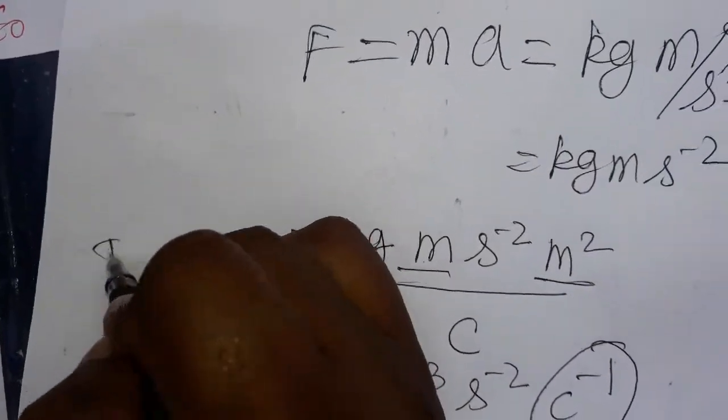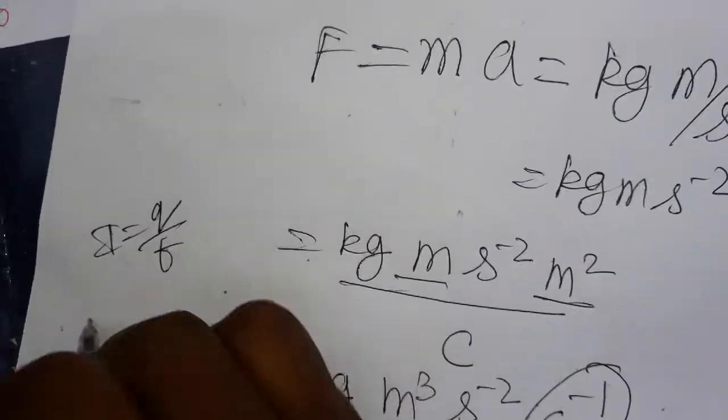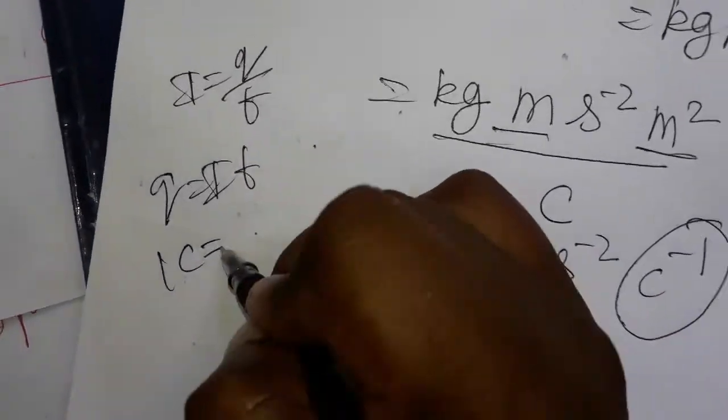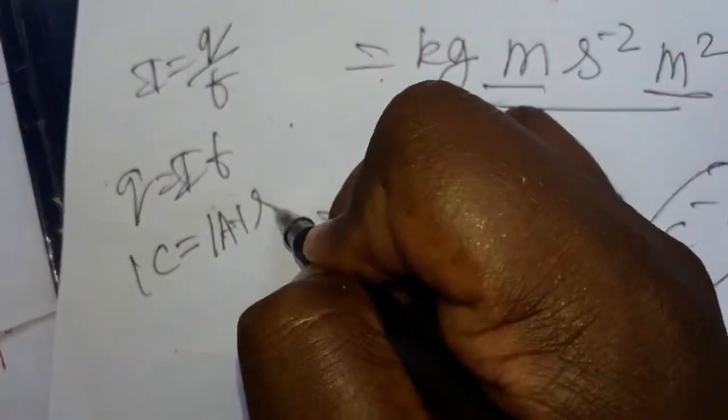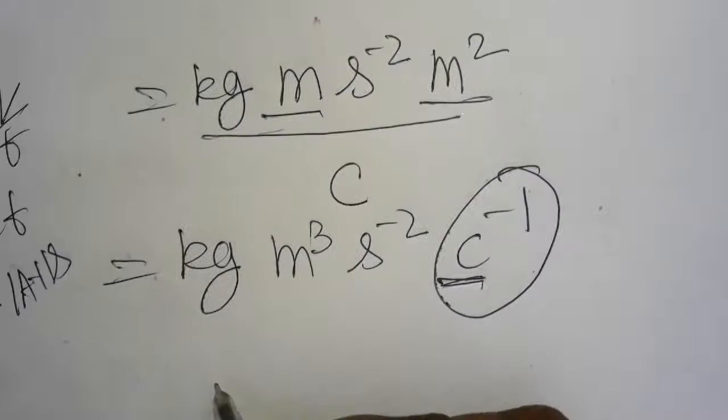Coulombs inverse I am going to take as ampere into second, because current is equal to charge by time. So charge equals current into time. One coulombs equals one ampere into one second.